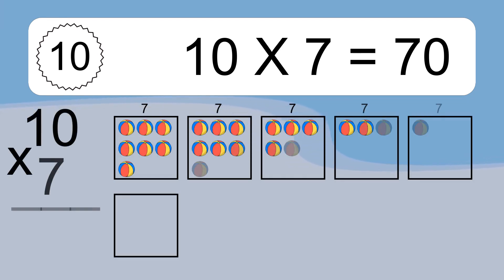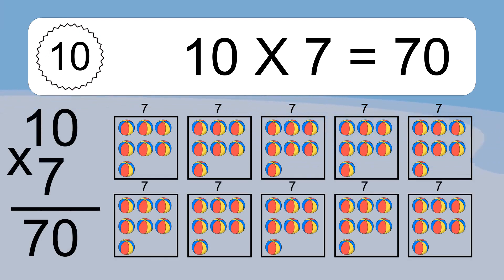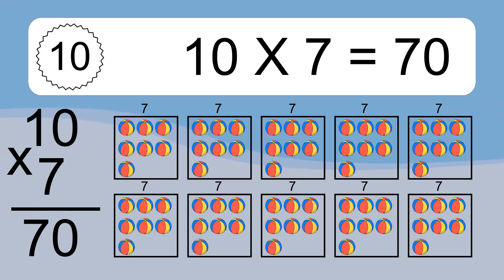10 times 7 equals what? 10 times 7 equals 70. We have 10 boxes, and each box has 7 colorful balls inside. If you count all the balls in all the boxes together, you will have 10 times 7 balls. This equals 70 balls.